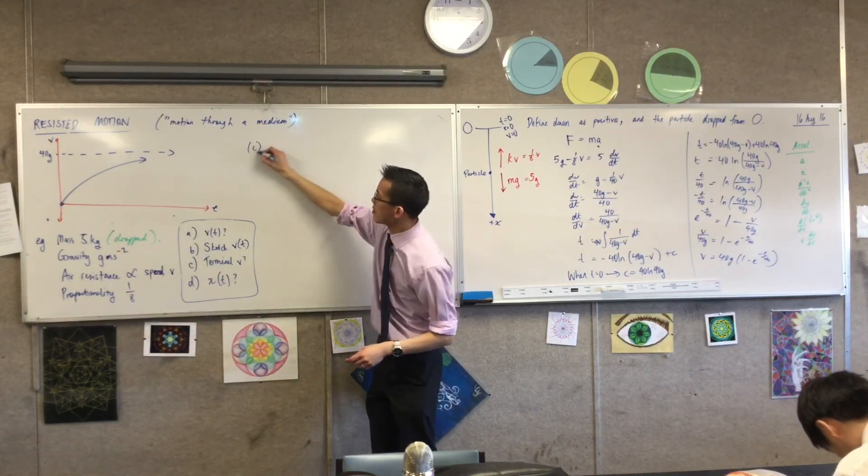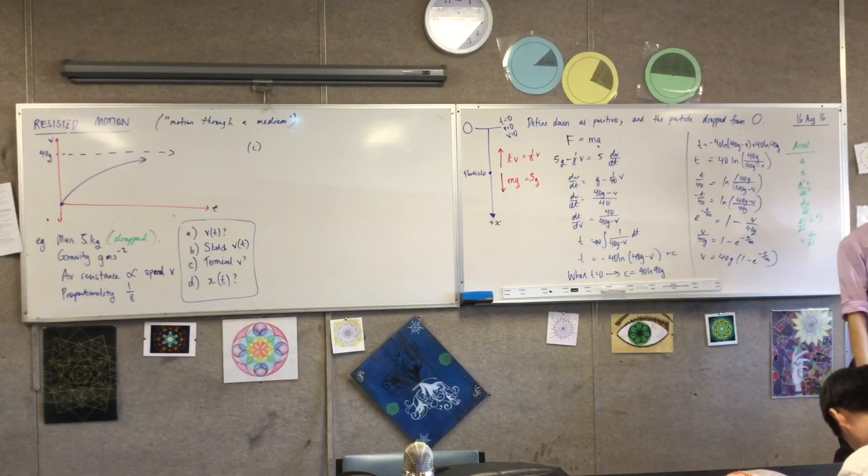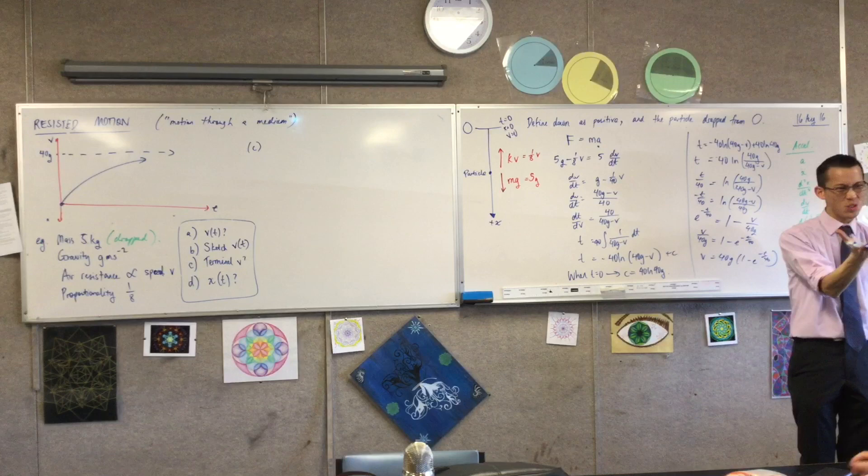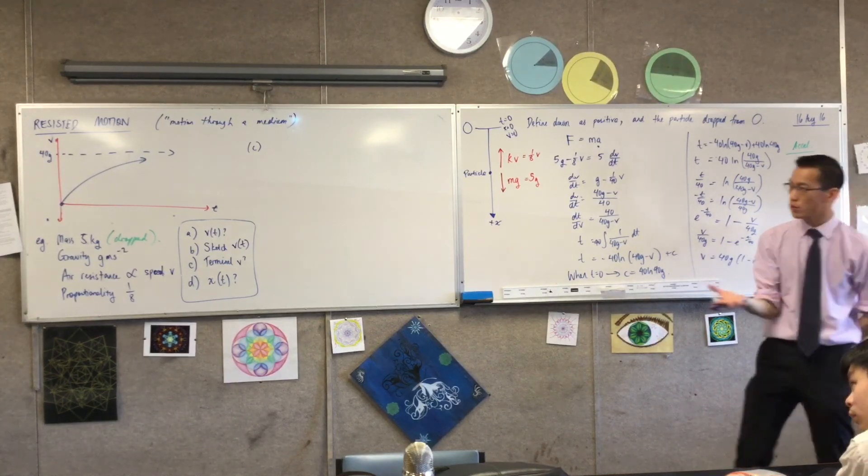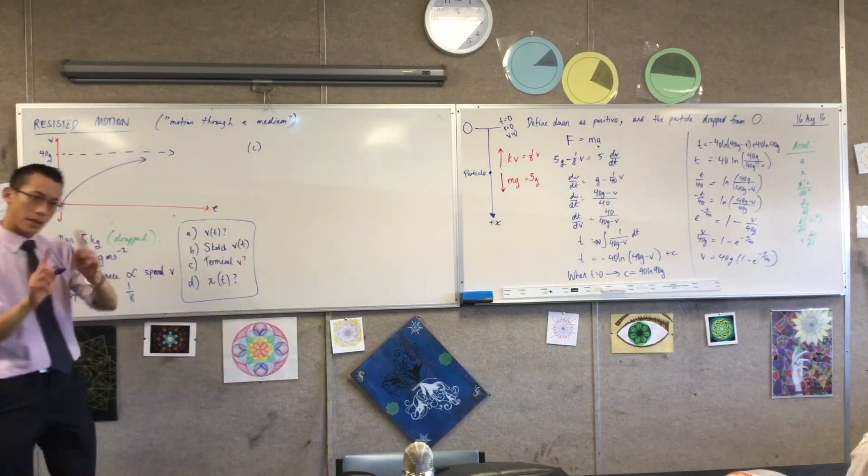So, that was part B. It wasn't very complicated. Now when you're answering part C, there's two ways to go about this. Two ways. You can think about it from a limit point of view, because that's what the term velocity is, after all. Or you can think about it from a Newton's laws point of view.